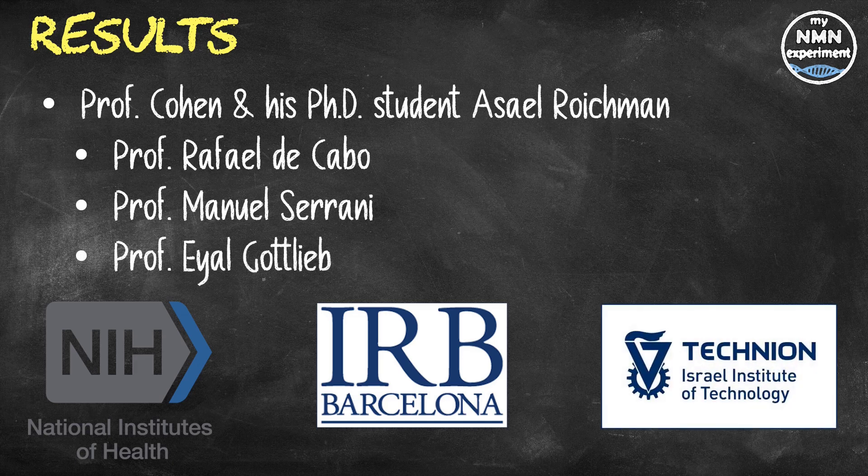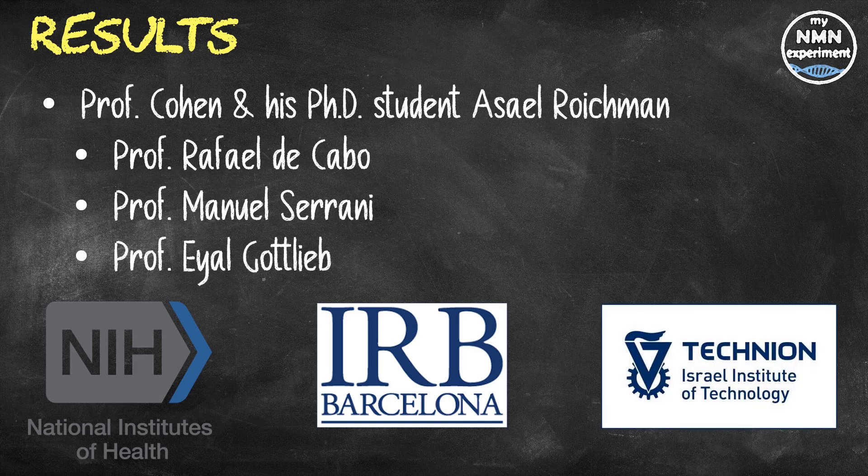They reported that transgenic mice expressing high levels of SIRT6 gene showed their life expectancy can be increased by an average of 30% in both males and females. Translated into human terms, this means that a 90-year-old person could live to be nearly 120.